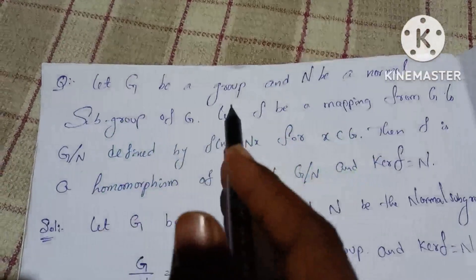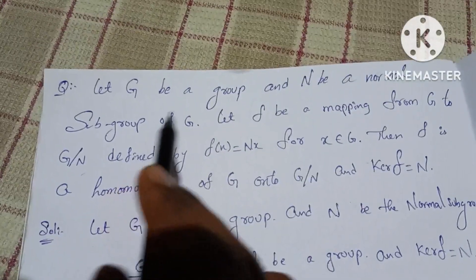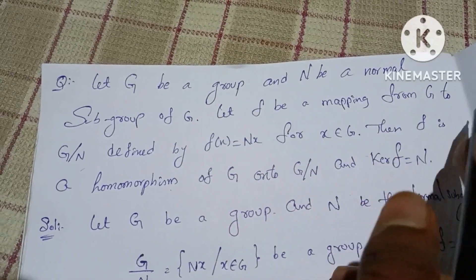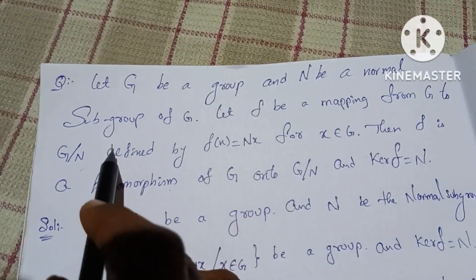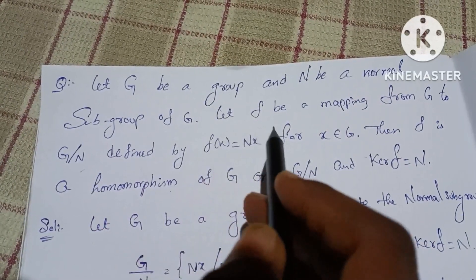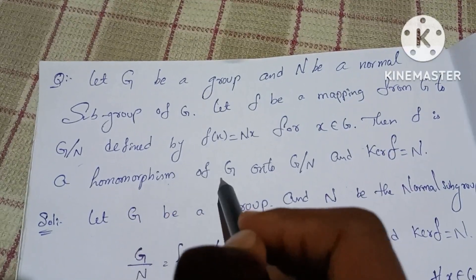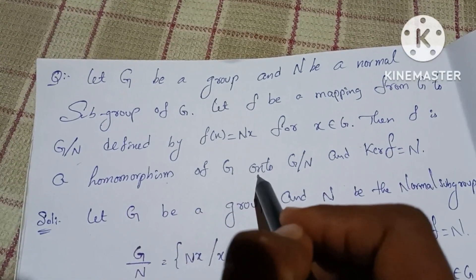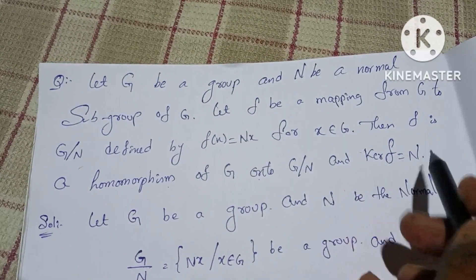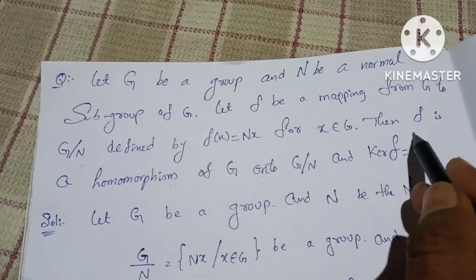Let G be a group and N be a normal subgroup of G. Let F be a mapping from G to G/N defined by F(x) = Nx for x belongs to G. Then F is a homomorphism of G onto G/N, and we will prove that F is a homomorphism.